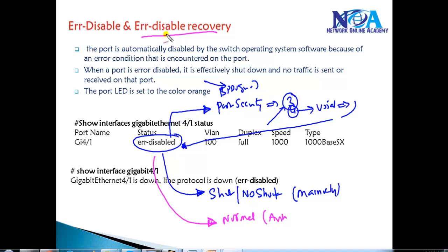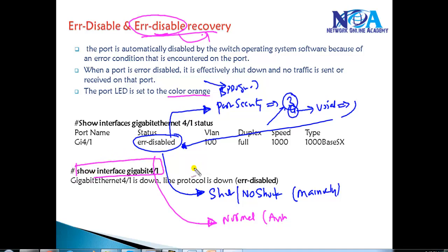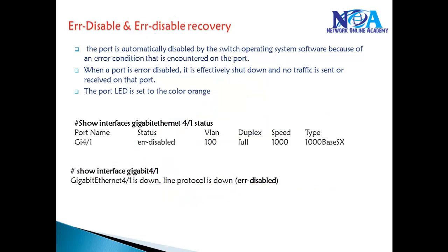If the port goes into Error Disable State, you will see that particular port in a different color — orange — and we can verify the status by using Show Interface Status, or verify with a specific interface like Show Interface followed by the interface name. You will see the interface is down because it is in Error Disable State.